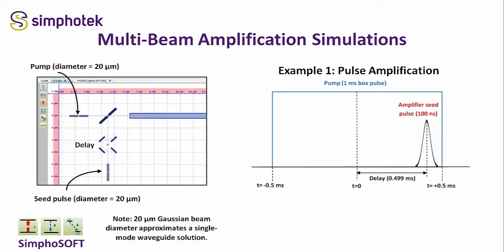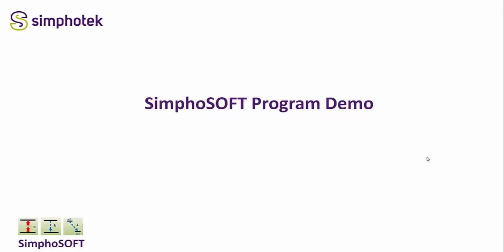For the first example of pulsed amplification, we set up a pump beam with a diameter of 20 microns and a seed beam also with a diameter of 20 microns. The 20 micron Gaussian beam diameter approximates a single-mode waveguide solution. Both the pump and probe are directed into the sample. The pump uses a box-shaped flat-top pulse one millisecond long. The seed pulse is 100 nanoseconds, delayed a little less than half a millisecond with respect to the center of the pump beam. In Symphosoft, delays are measured from the center of one beam to the center of the other beam.